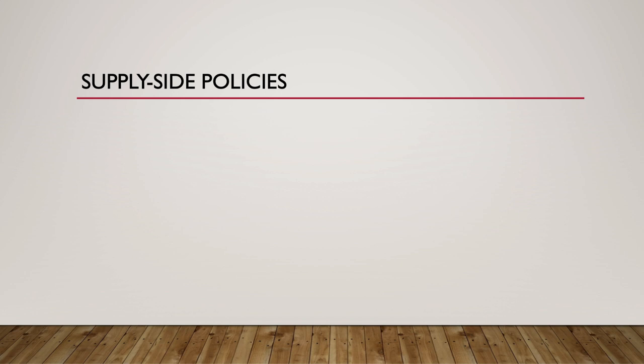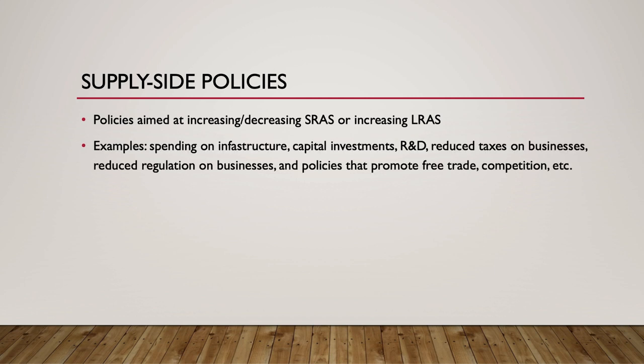Policies aimed at increasing or decreasing aggregate supply are called supply-side policies. Examples of supply-side policies include increased spending on infrastructure, capital investments — both physical and human — investments in R&D, reductions in taxes on businesses, reducing regulation on businesses, and other policies that promote free trade, competition, and creativity or technological innovation.